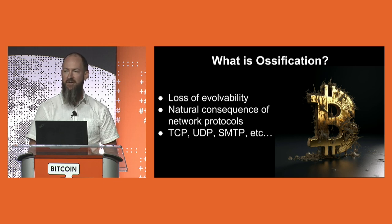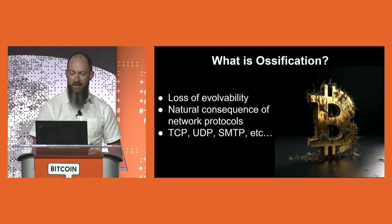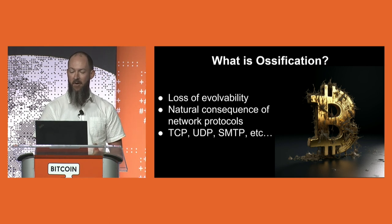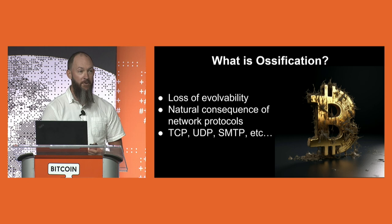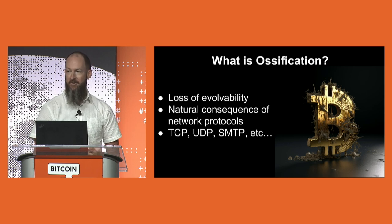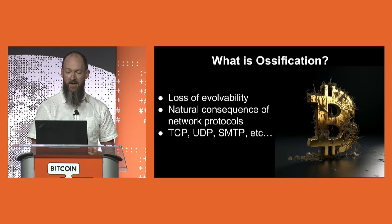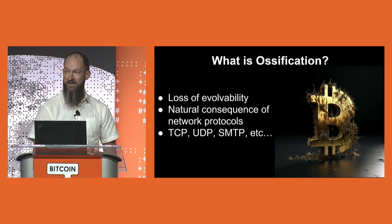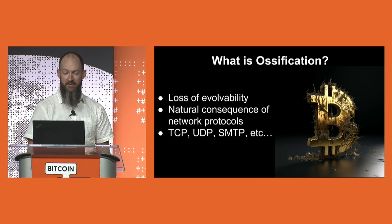Essentially what happens to network protocols is their ability to update is crushed under the weight and the inability to coordinate amongst all of the different users of that protocol. Ossification is a major issue in all internet protocol design and deployment. This can prevent updates from happening, or place restrictions on the design of new protocols and the ways that you can make updates to already deployed protocols. Some good examples of this are TCP and UDP. As of today, these are the only two practical choices for transporting data across the internet, and they have both significantly ossified over the decades, making extension and modification of them basically impossible.